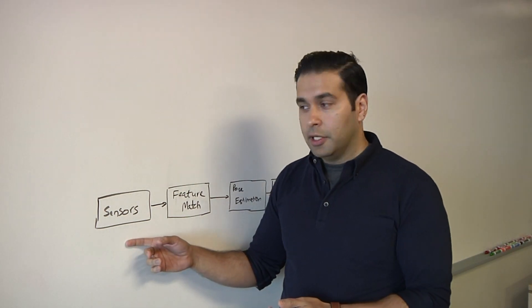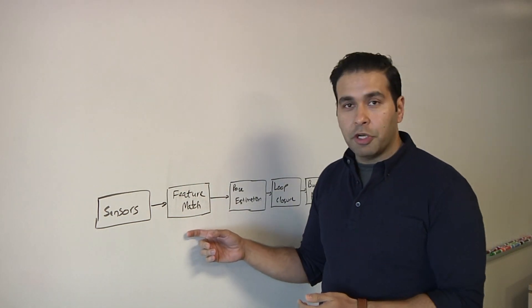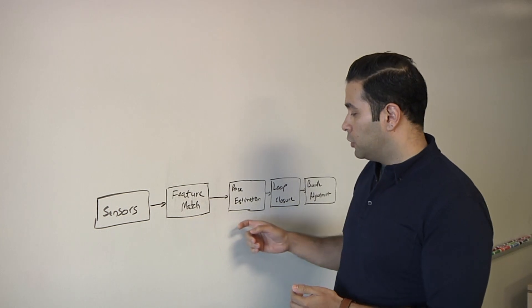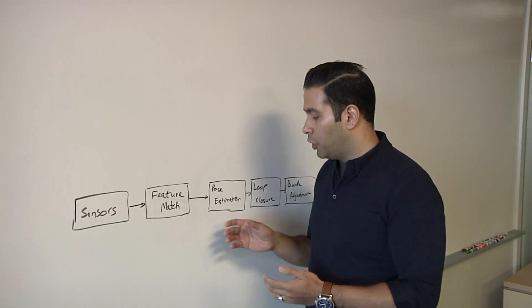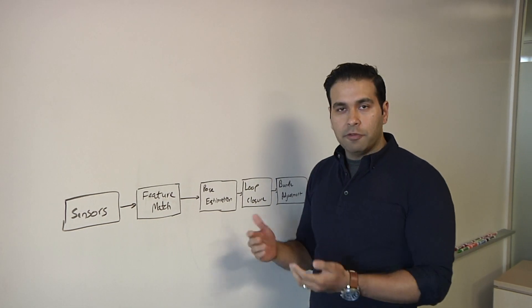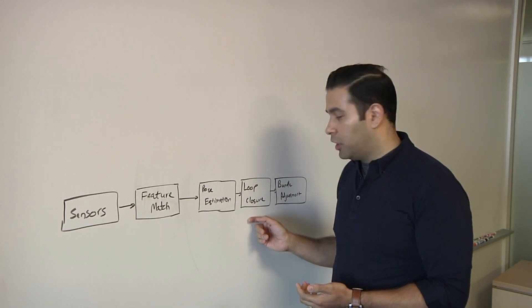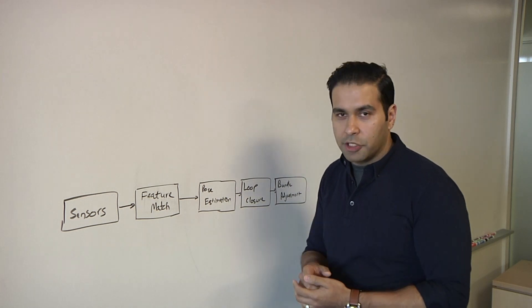So, we start first with a sensor that feeds in data to a feature matching block. That further is used to come up with the basic odometry, visual odometry, or pose estimation. And then you can do further refinements with loop closure and another stage following that called bundle adjustment.